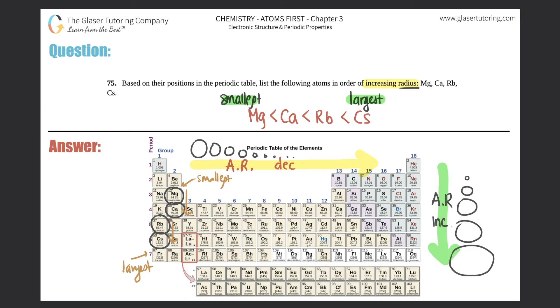Alright, so box this answer off. This one was easy - it all comes down to your radius trends. Just remember those trends as you go across a period and as you go down a group.